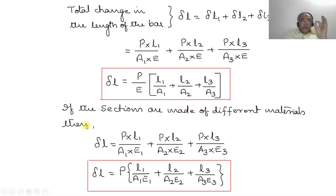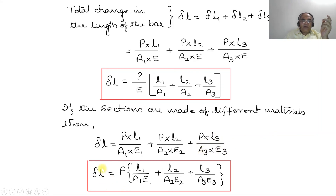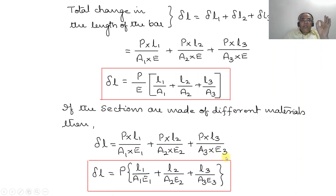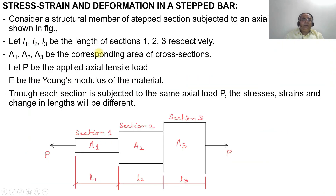If the sections are made of different materials, such as a composite material, then delta_L = P·L1/(A1·E1) + P·L2/(A2·E2) + P·L3/(A3·E3). Taking P as common factor: delta_L = P · (L1/(A1·E1) + L2/(A2·E2) + L3/(A3·E3)). This is how you find the total change in length, and the stress-strain relations and deformation in a stepped bar.